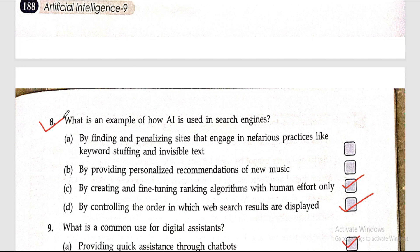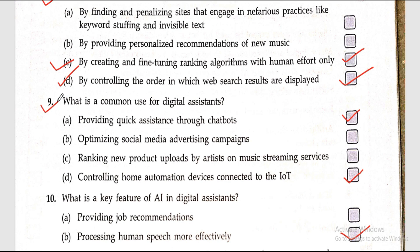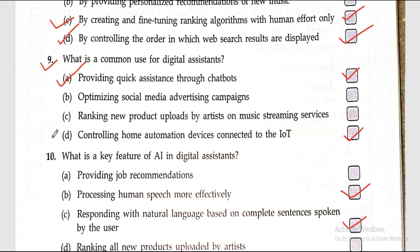Question eight: what is an example of how AI is used in search engines? The accurate answers are option C, by creating and fine-tuning ranking algorithms with human efforts only, and option D, by controlling the order in which web search results are displayed. Question nine: what is a common use for digital assistants? The accurate answers are providing quick assistance through chatbots and controlling home automation devices connected to the IoT.